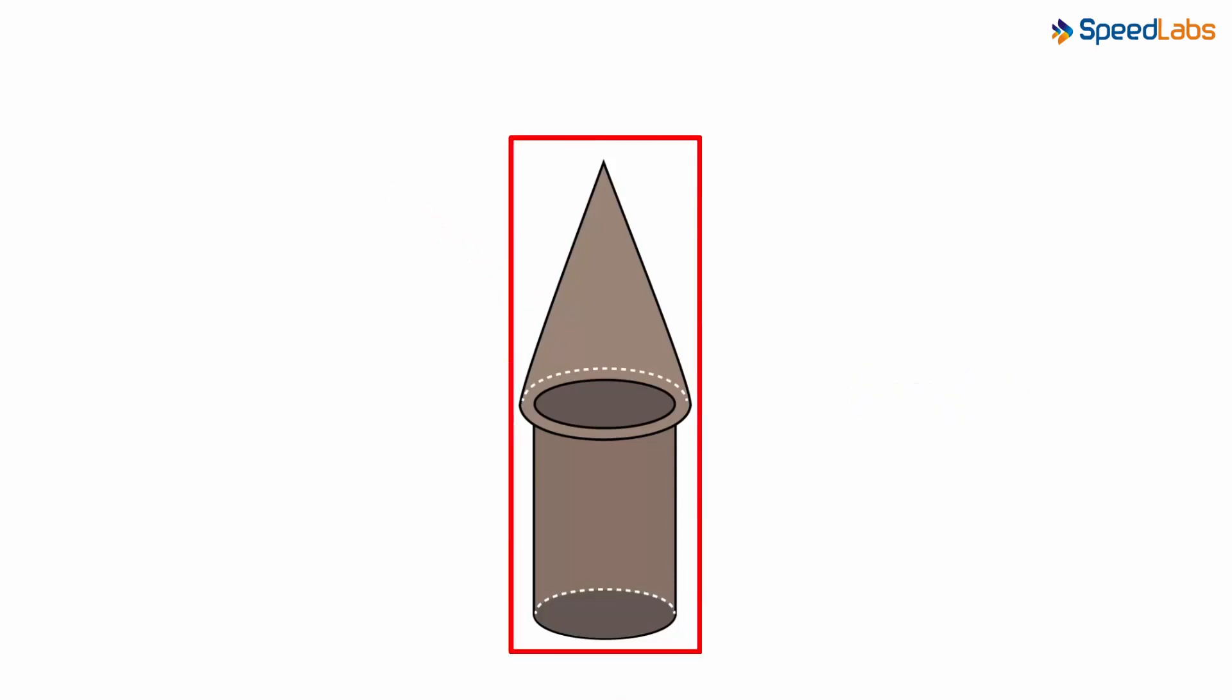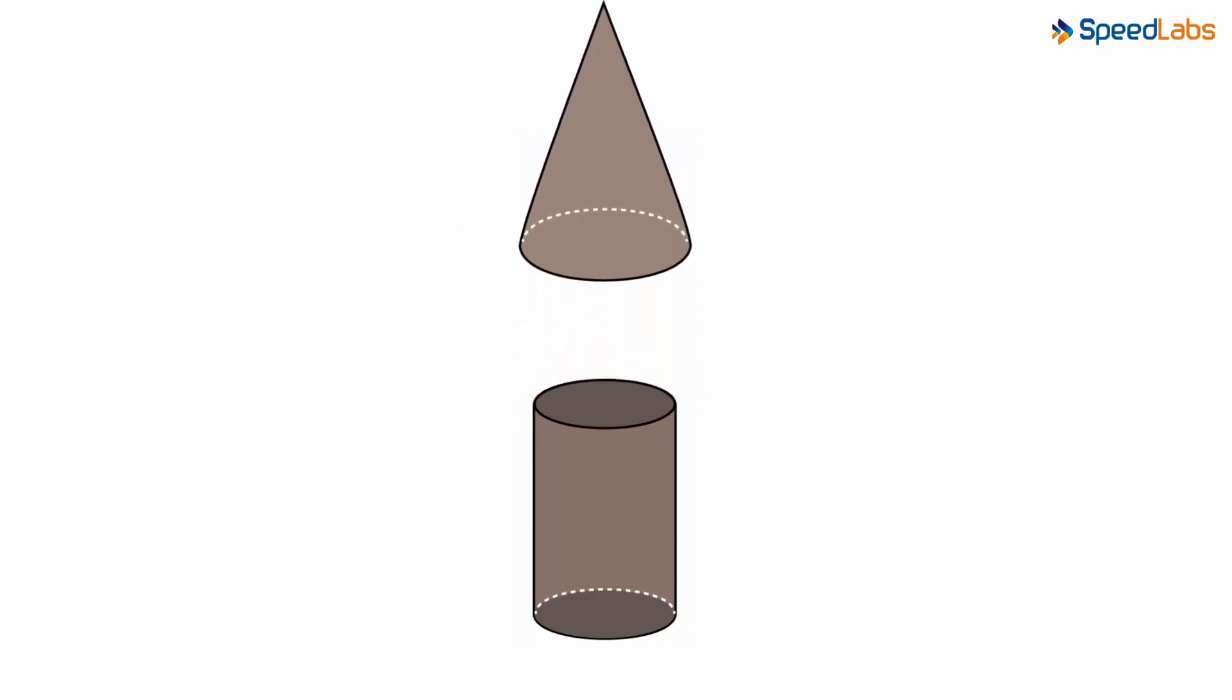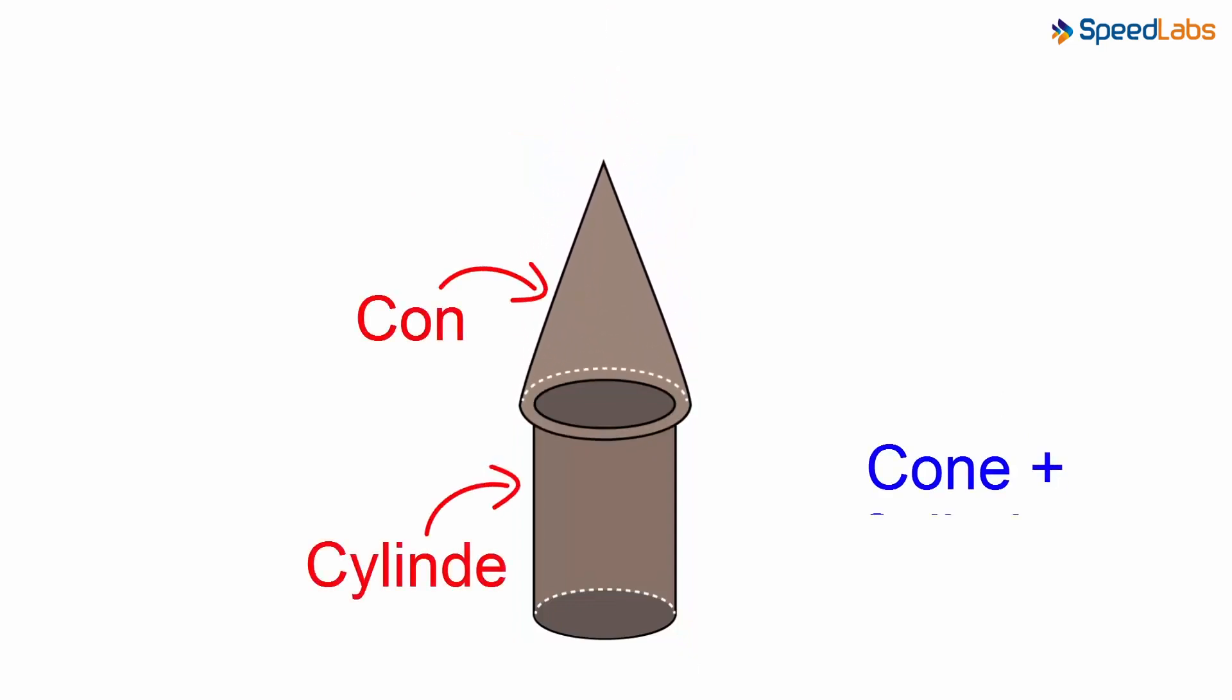What does this shape look like? It looks like a rocket, yes. It is obtained by combining a cone and a cylinder. Cone on top of a cylinder to be precise.